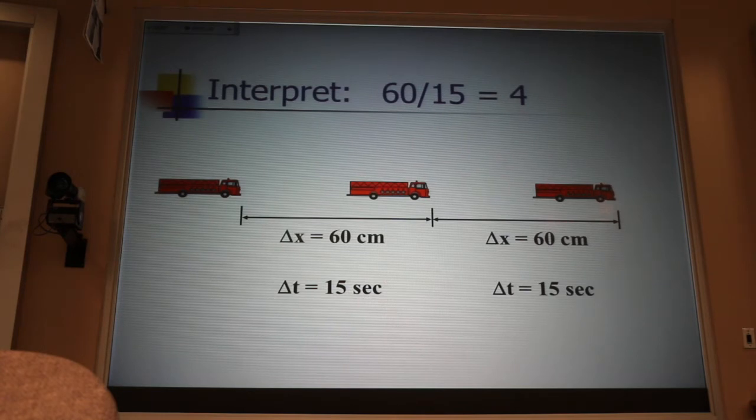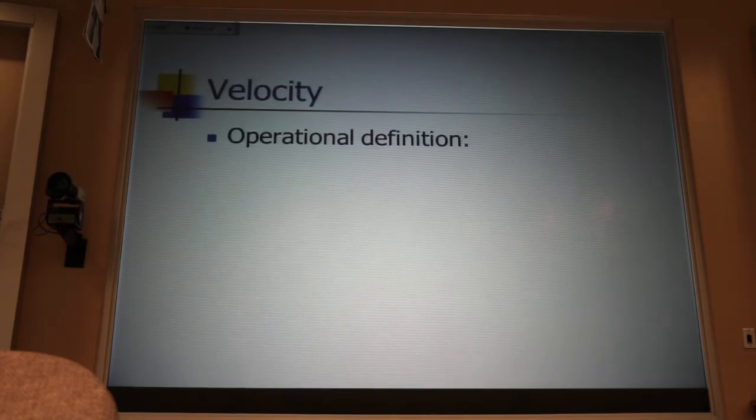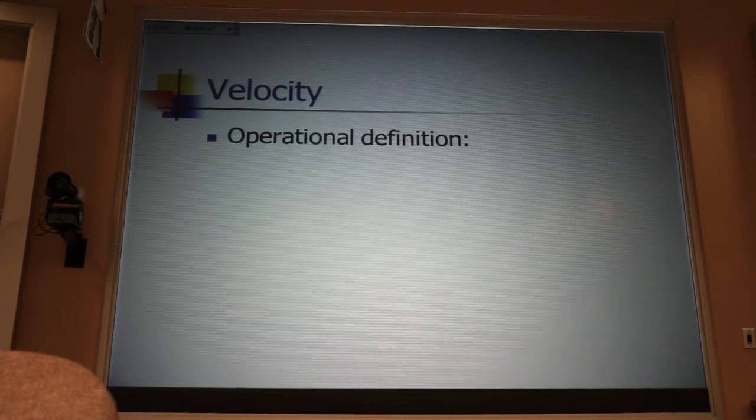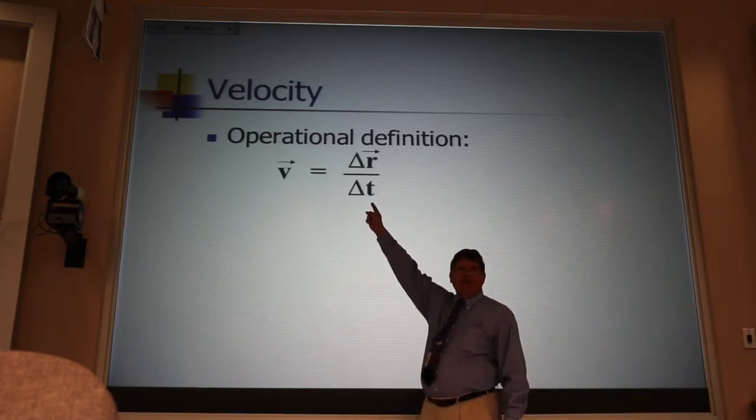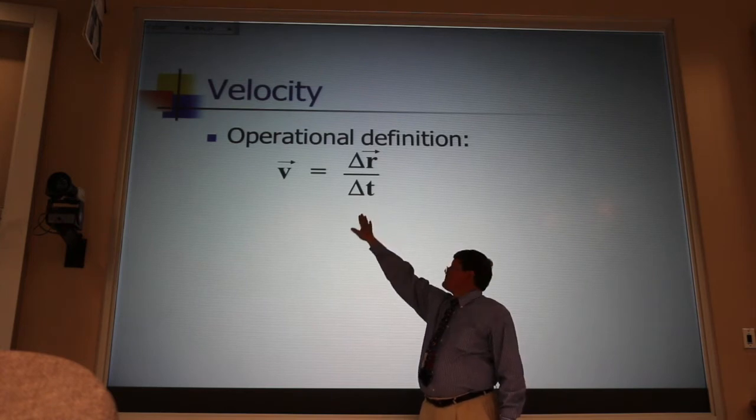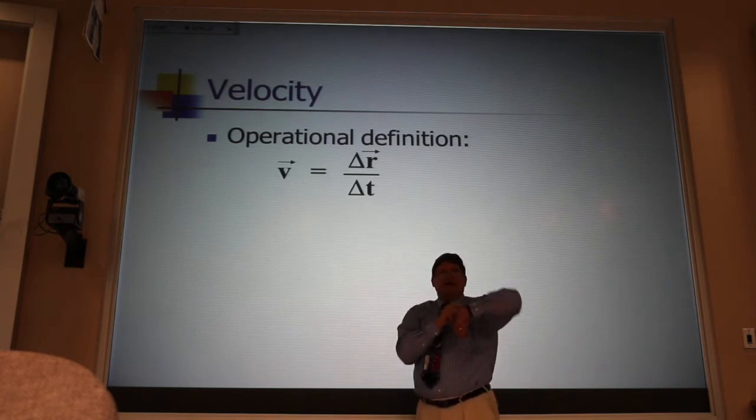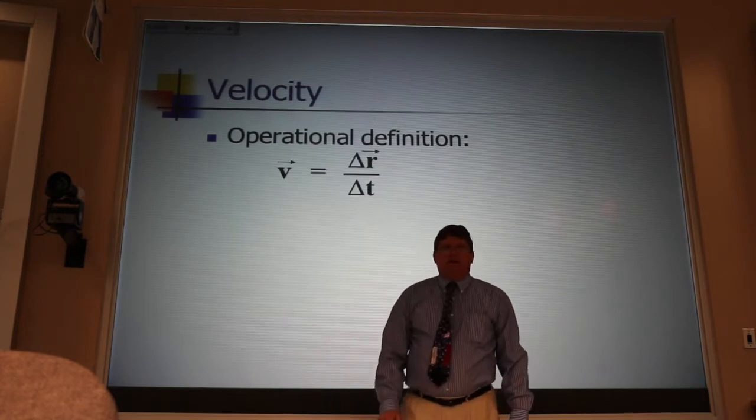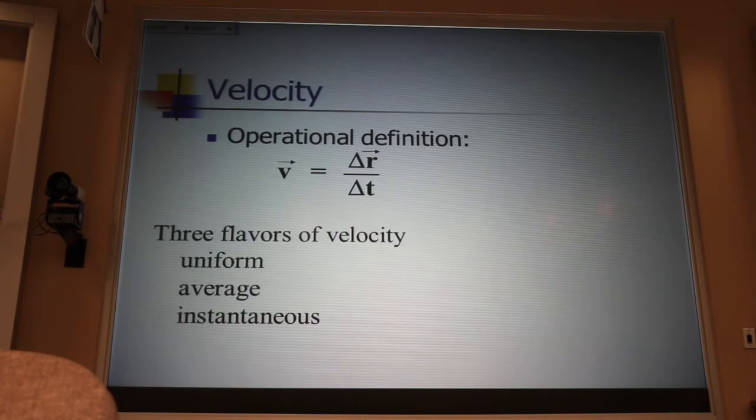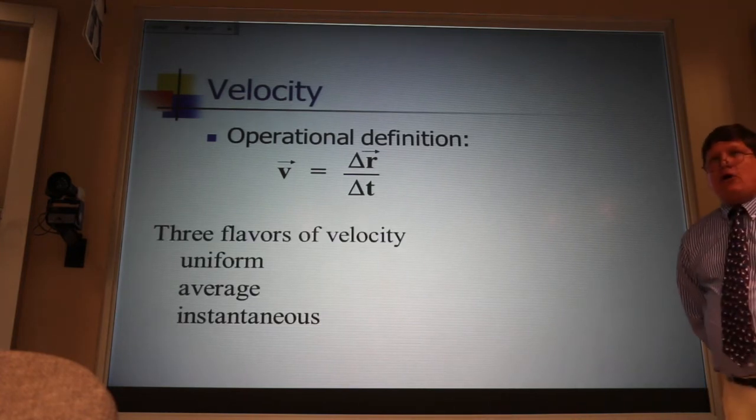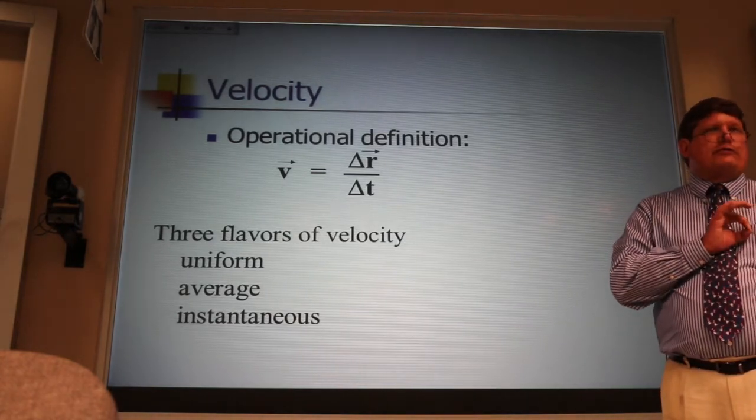Now its name would be the velocity, but the name and the interpretation are very different things. The operational definition of velocity is very simple once we've operationally defined displacement. All we have to do is take our operational definition of displacement delta r and divide it by how many seconds on our stopwatch it took to make that displacement. Now it turns out that we have three flavors of velocity: uniform, average, and instantaneous. And I hope today to be able to talk about all three of those flavors.